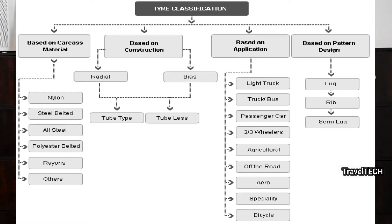Based on carcass material, tires are further classified into about six types: nylon, steel belted, all steel, polyester belted, rayon, and others. Based on construction, they are classified into radial and bias tires. Radial tires are the ones most commonly used in our cars, and they are further classified into two types: tubeless and tube tires. Bias tires are also classified into tubeless and tube tires.